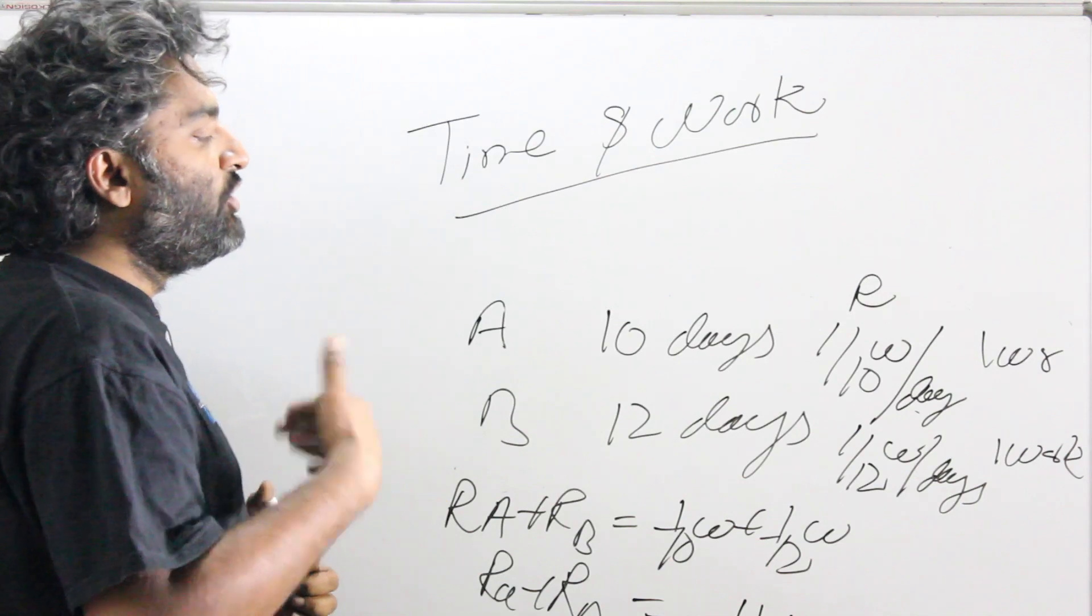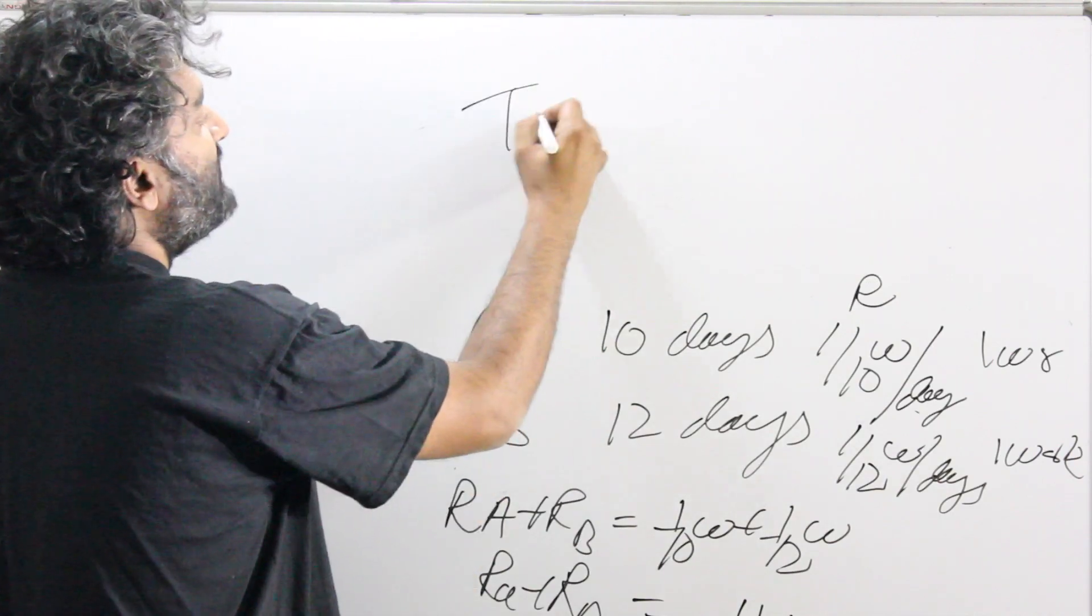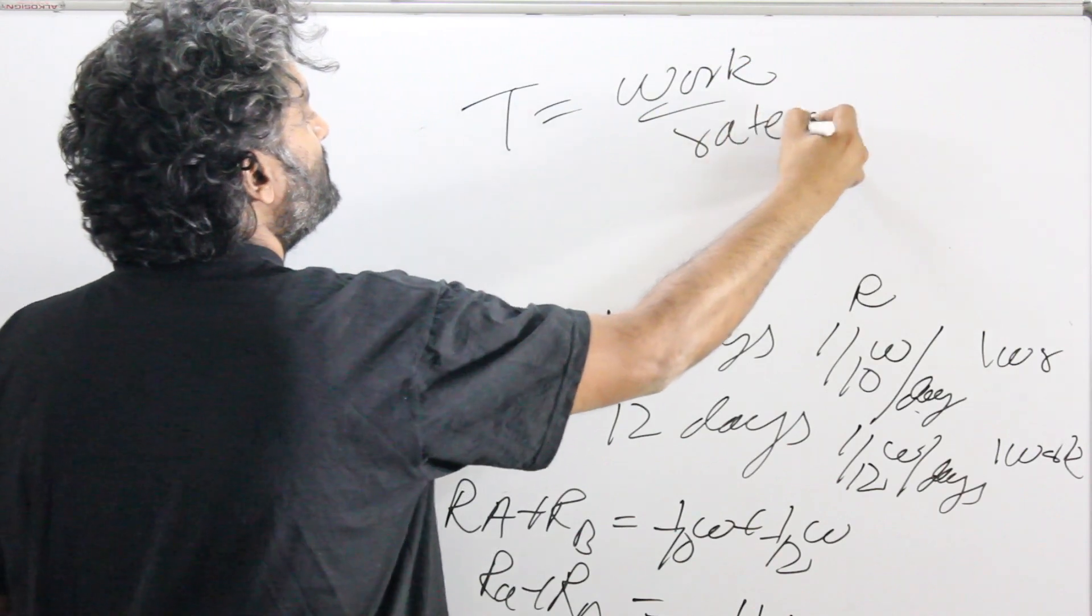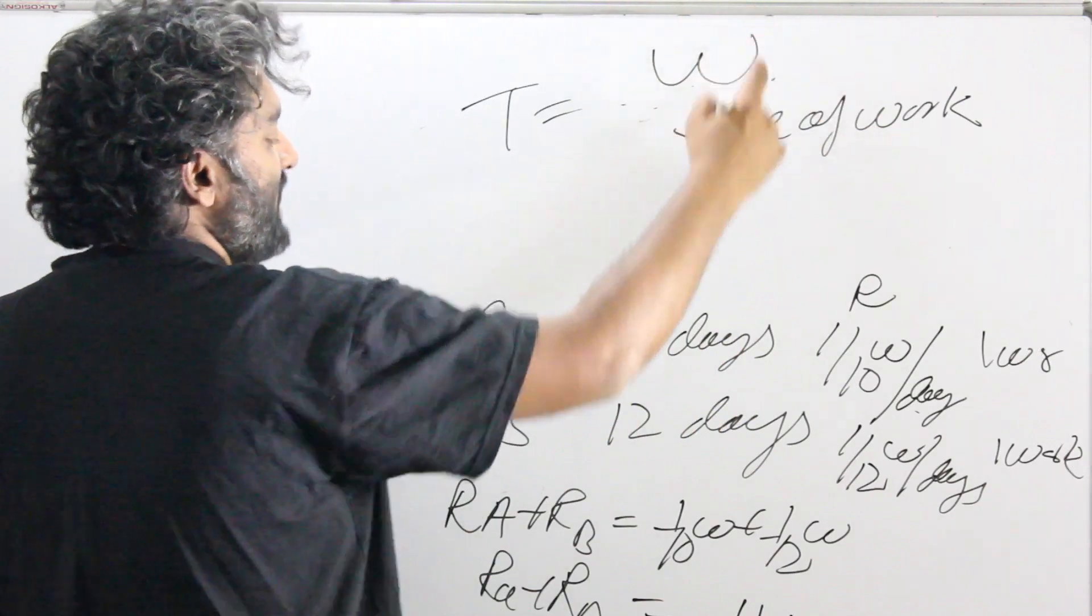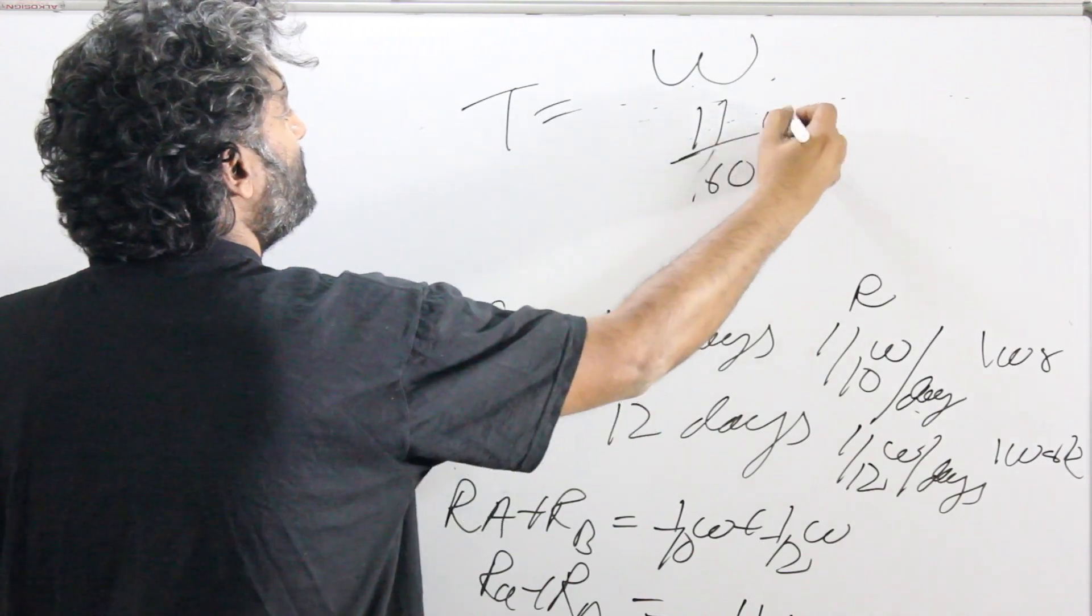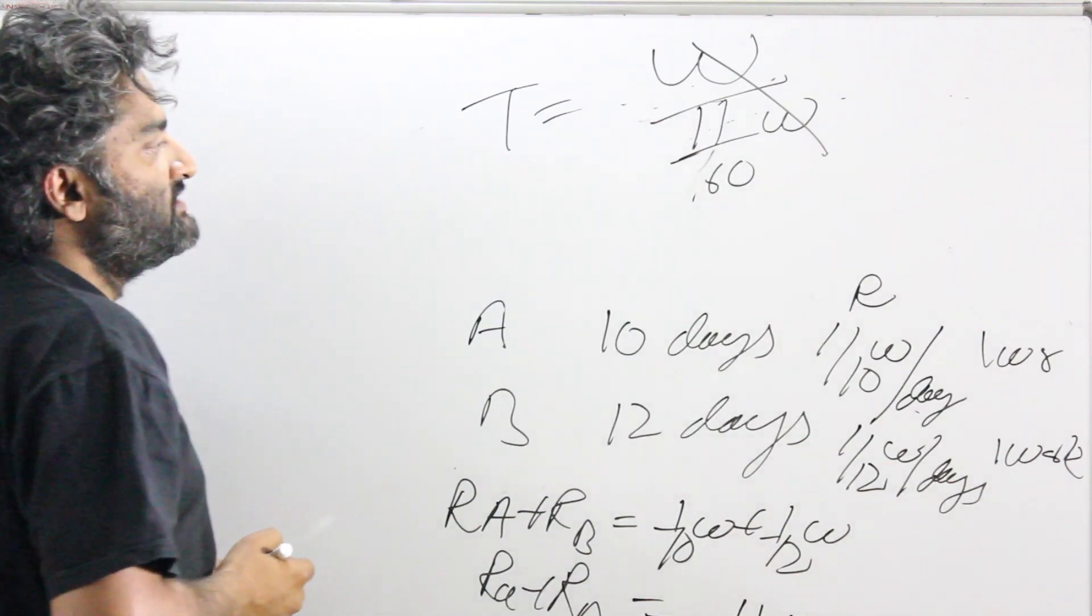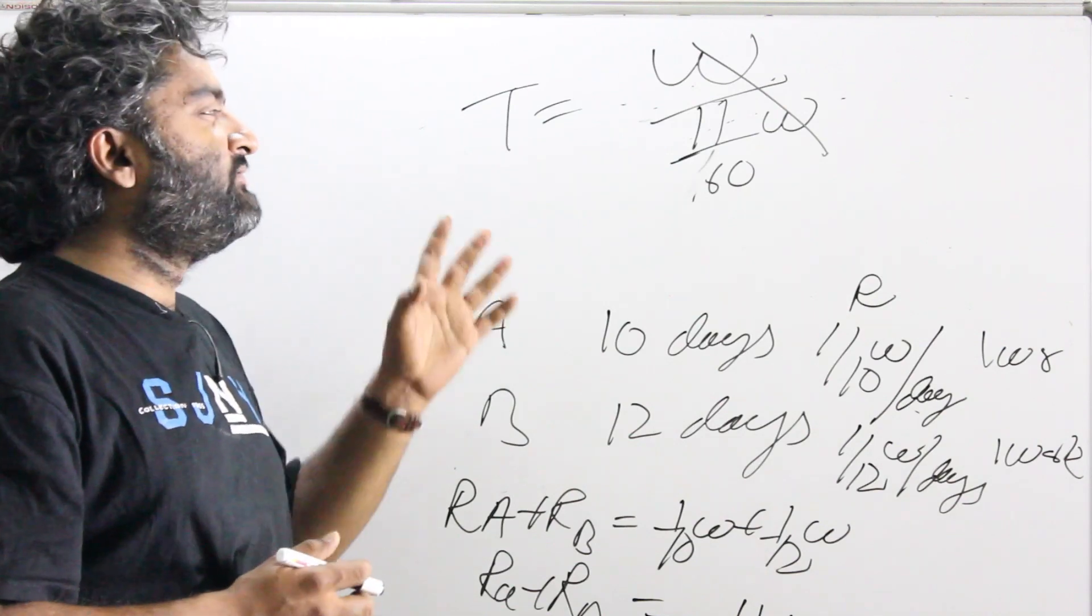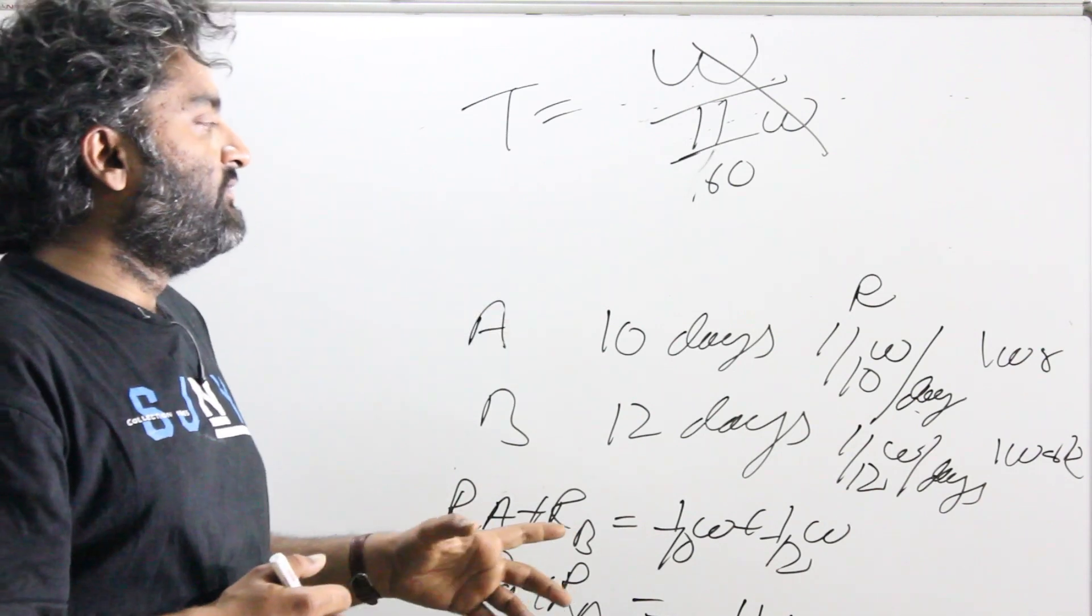Now the question was, how long will it take for the work to get done? I know that time taken would be total work divided by rate of work. Total work in this case is W and rate of work is 11 by 60 W. This W gets cancelled and I get 60 by 11 as my answer. If A and B were working together, the work would get done in 60 by 11 days.